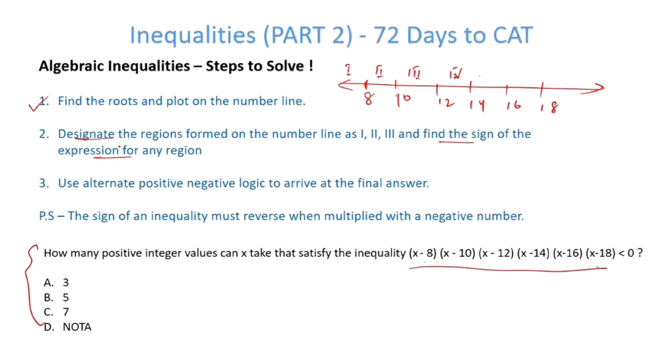Now, for any region, let's find out the sign. For the first region, we can find out the sign by putting any point which is there in the first region. So, for example, let's say 0 lies in the first region because 0 is on the left side of 8. So, we will put 0. If I put 0 everywhere, this is negative, negative, negative, negative, negative, negative. So, overall it becomes positive. So, if you put 0, the region 1 is basically positive.